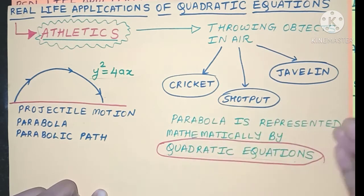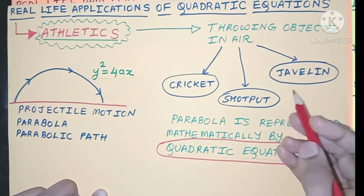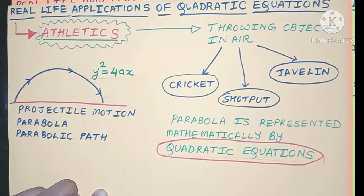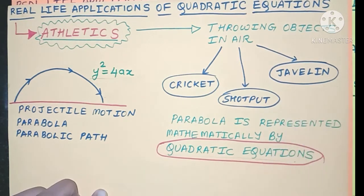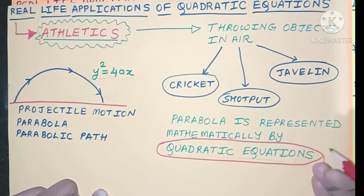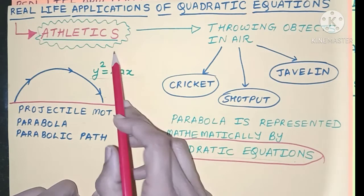Quadratic equations are used to estimate at what speed a ball should leave the bat to get a boundary, or what speed an athlete should throw a javelin to reach a particular maximum height or the farthest distance. For all this analysis, quadratic equations always come into play and are very useful in athletics.